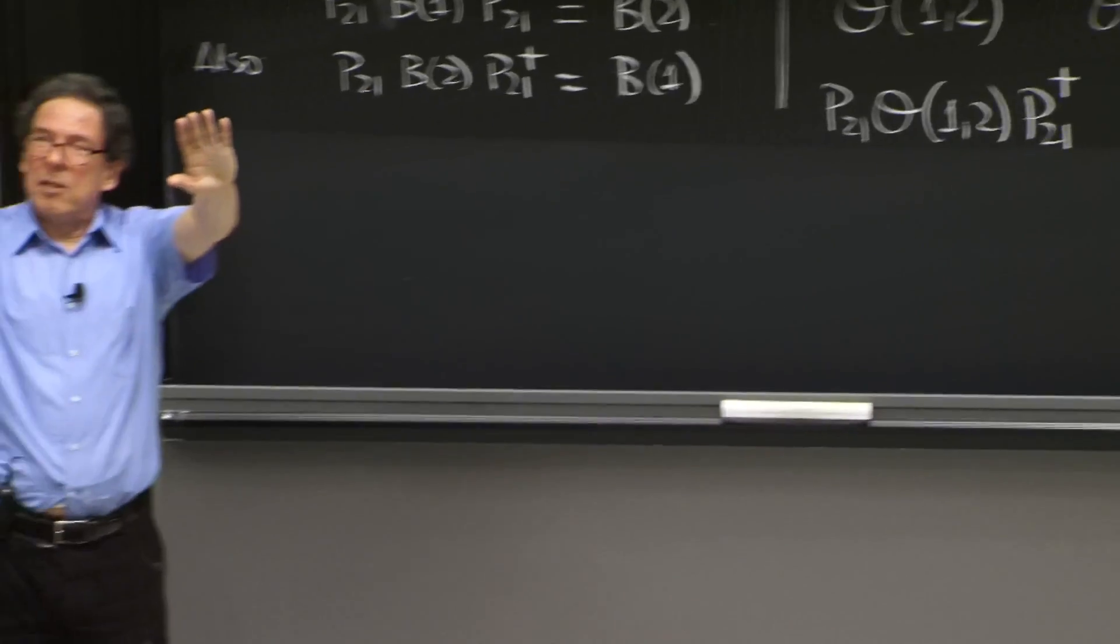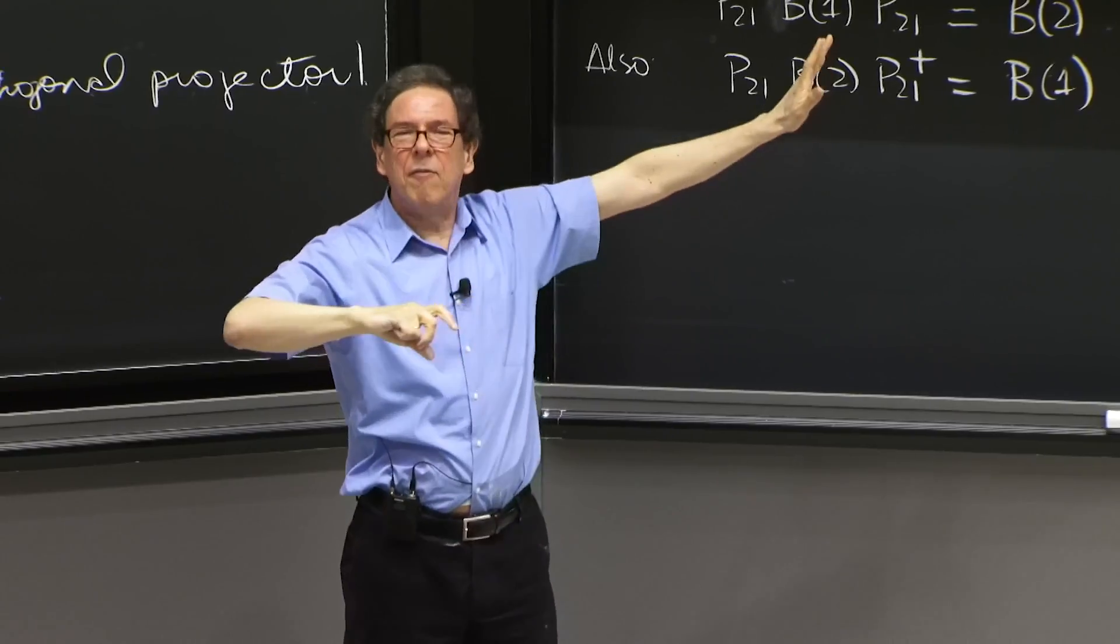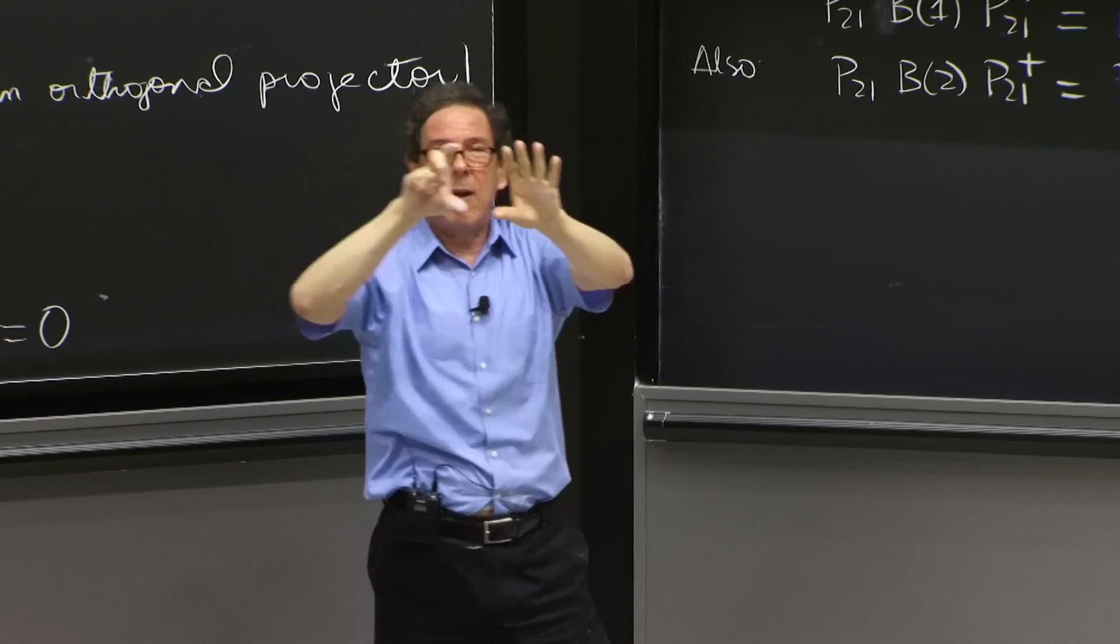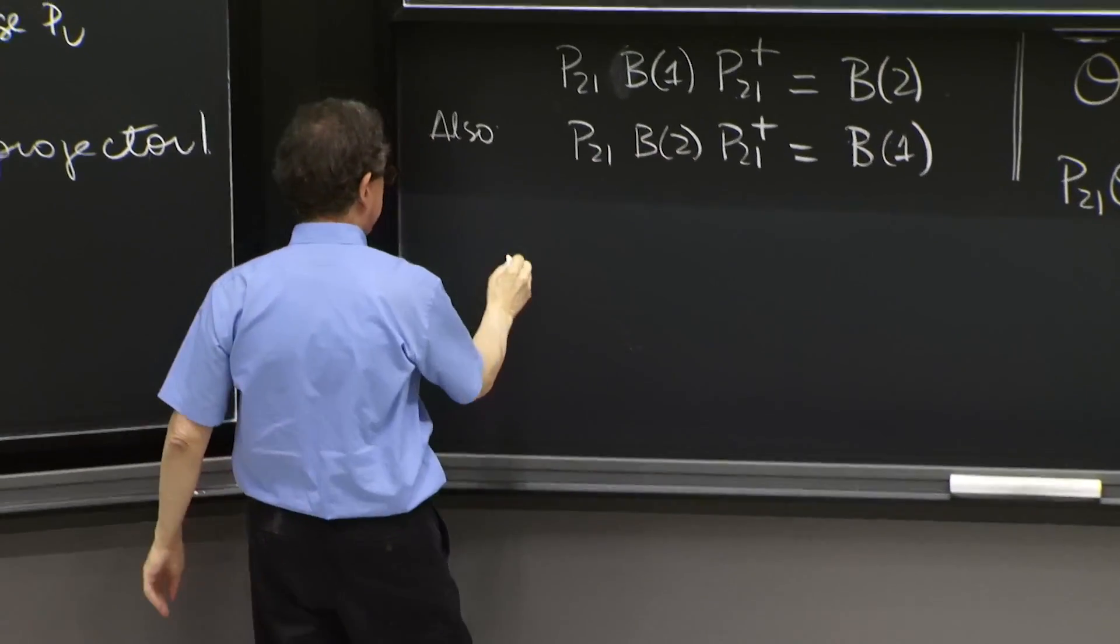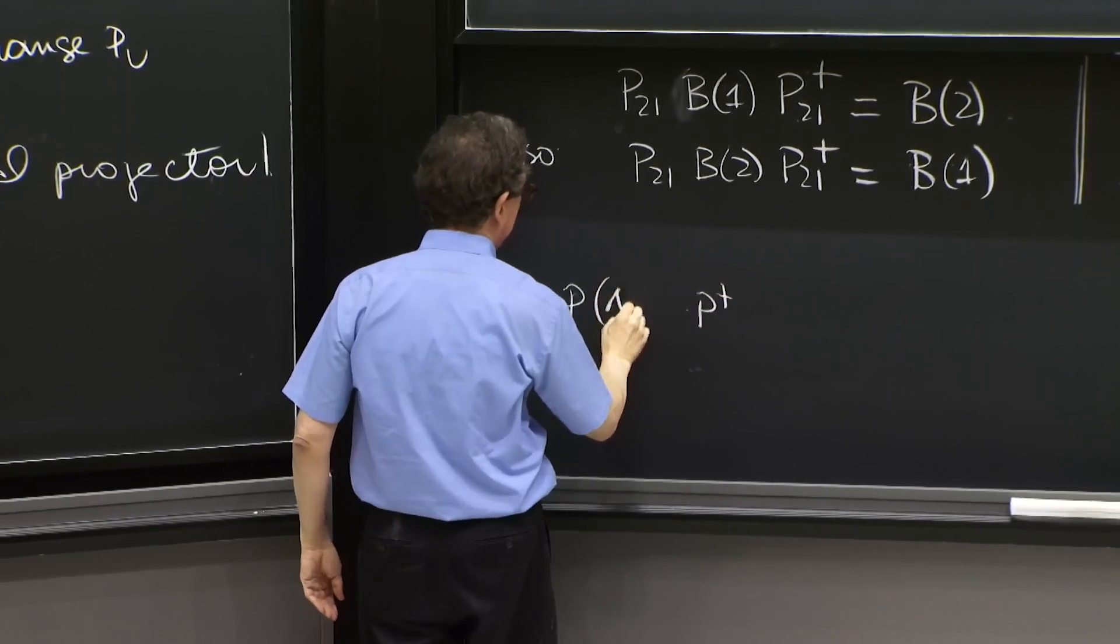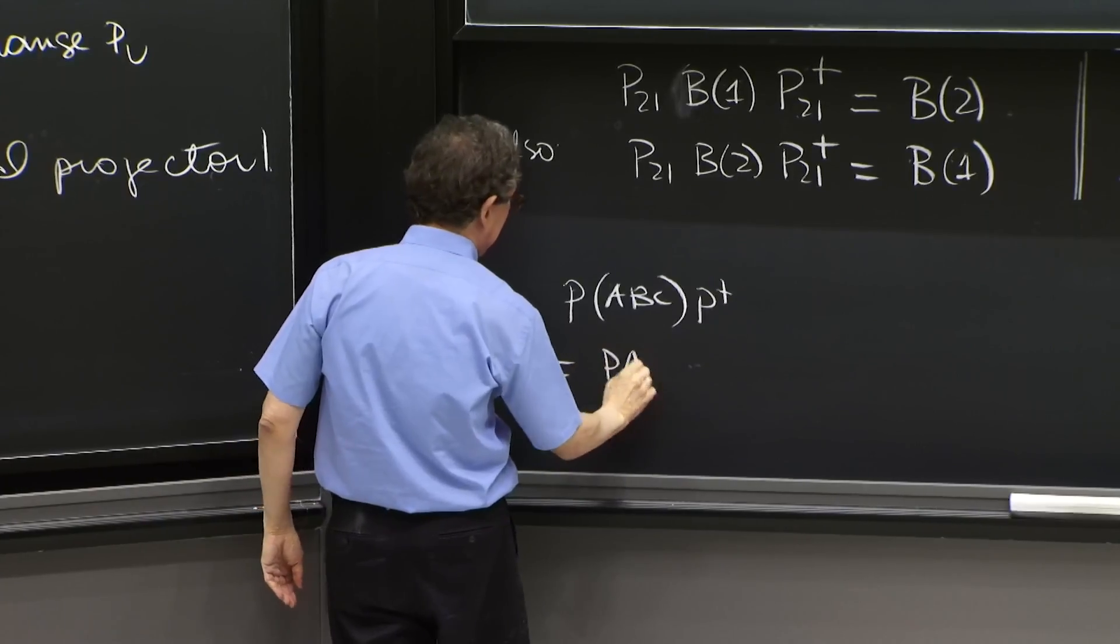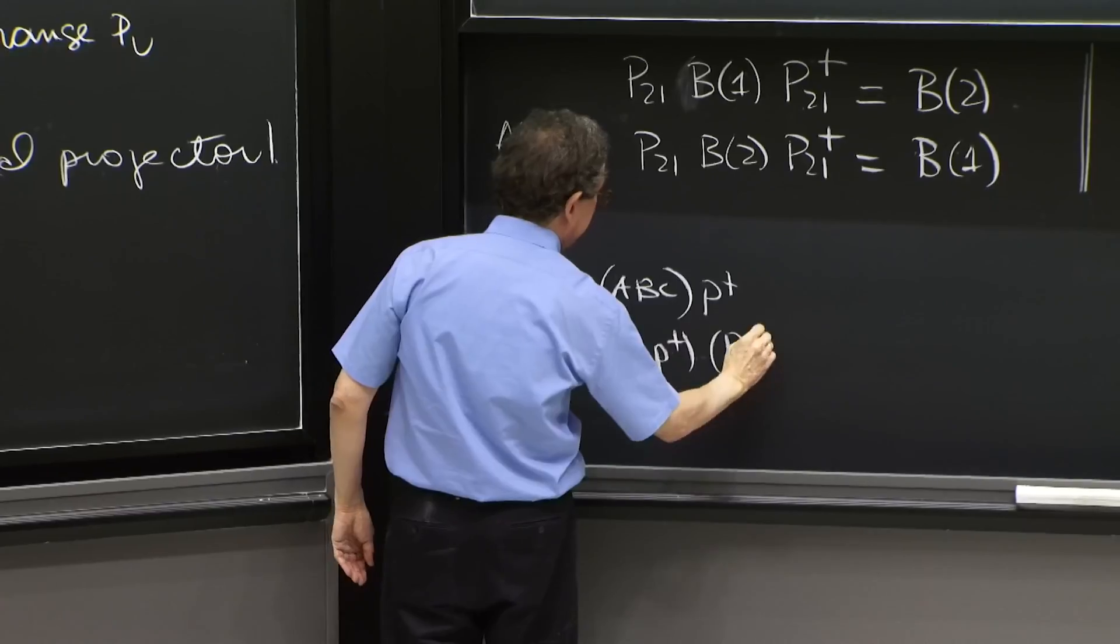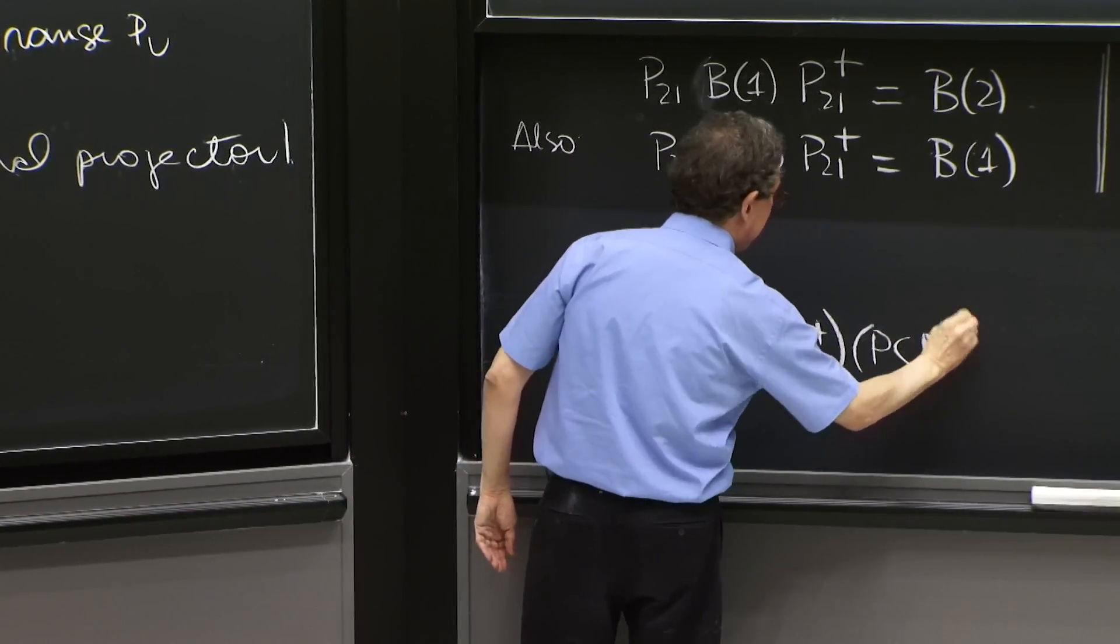Now, the great advantage of having a P and a P dagger acting on a string of operators is that it is the same as having a P and a P dagger acting on each one. Remember, if you have like P and P dagger, and it's a unitary operator on A, B, C, it's the same as P A P dagger, P B P dagger, P C P dagger.